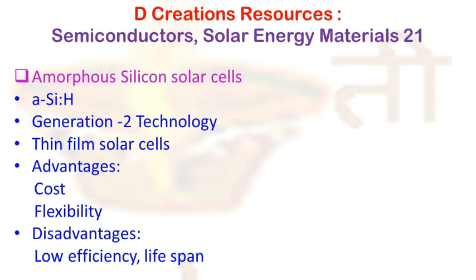The discovery that the Fermi level in glow-discharge-produced amorphous silicon (a-Si:H) can be moved up and down the bandgap by doping — just like in crystalline silicon solar cells — opened up potential applications in fabrication of various devices including solar cells. These materials have high photoconductivity, high absorption of visible light, an optical bandgap of 1.55 eV, and since large areas can be produced, low-cost solar cells can be made using these films.